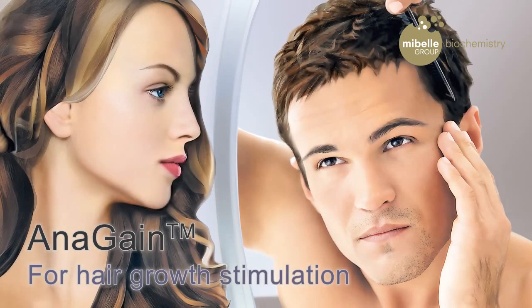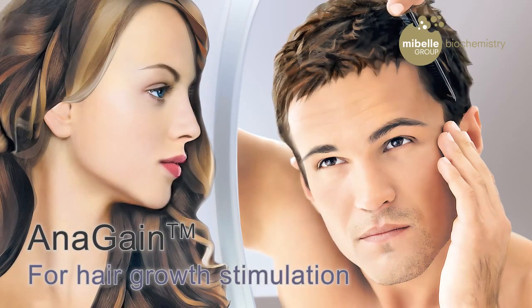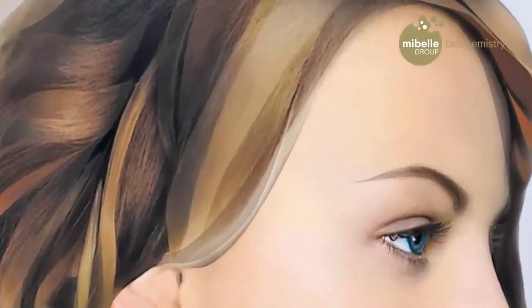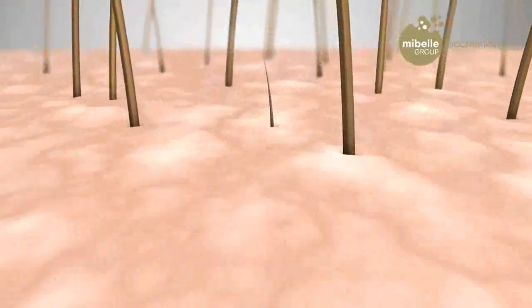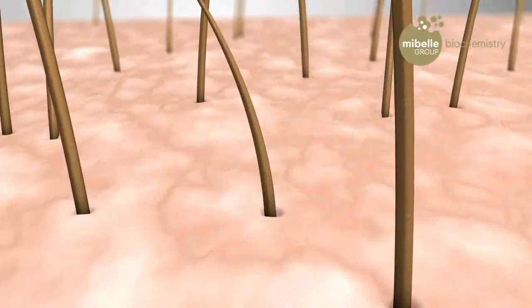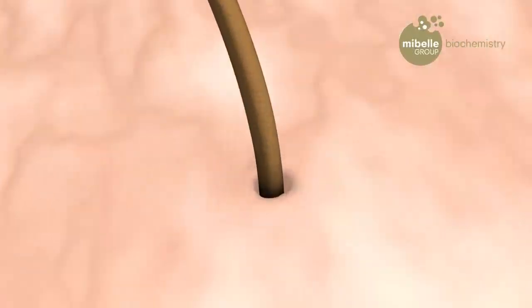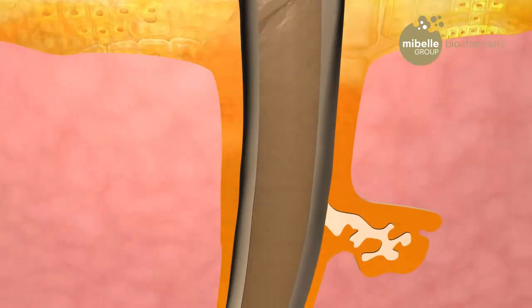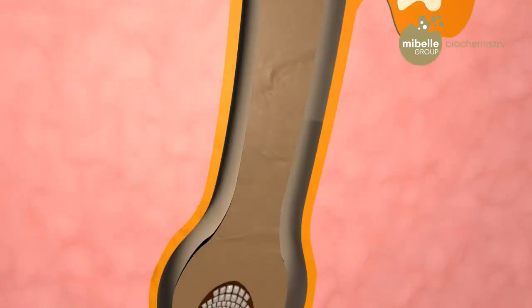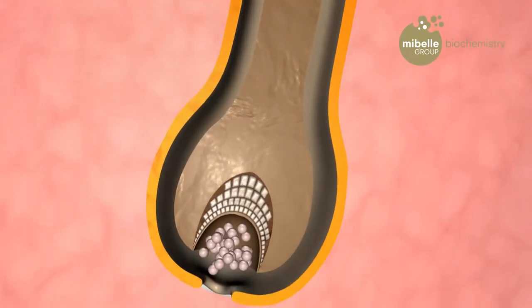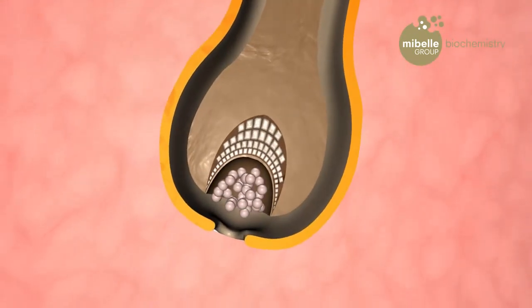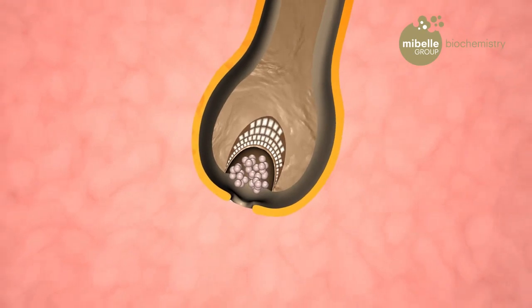Hair loss affects women and men. It is caused by an imbalance of the hair growth cycle, where too many hairs remain in a resting stage. Each hair follicle undergoes an independent growth cycle and originates from the hair matrix cells.